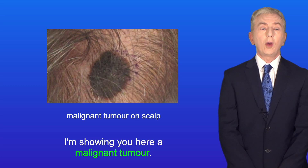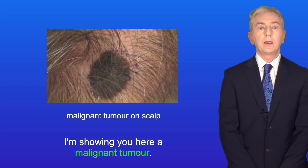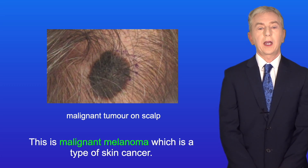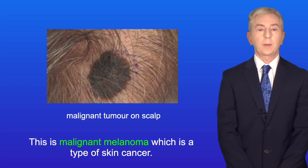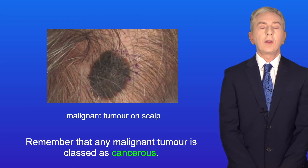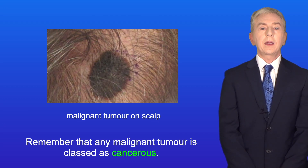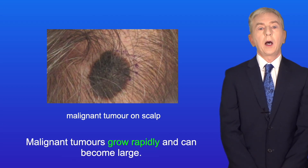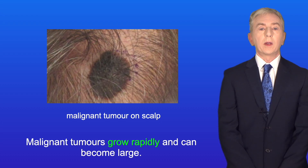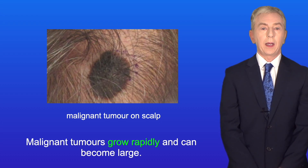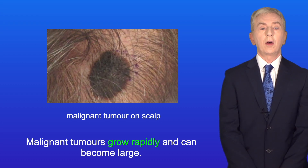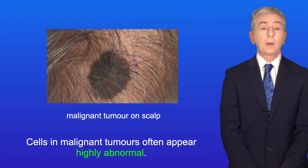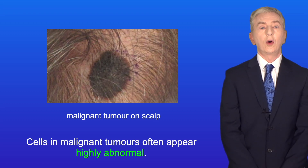Here is a malignant tumour — this is malignant melanoma, which is a type of skin cancer, and any malignant tumour is classed as cancerous. Malignant tumours grow rapidly and can become large, and cells in malignant tumours often appear highly abnormal.